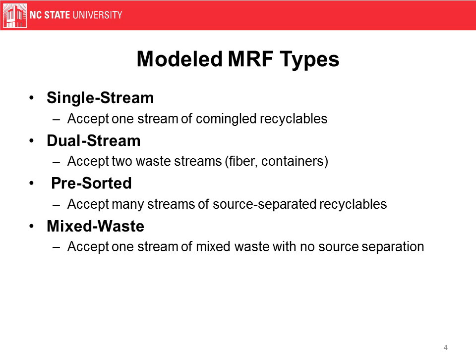Then we have a dual stream MRF, which instead of having one recycling bin on the curb, would have two. You'd have a container stream, which would contain plastic containers as well as metal cans. And then in a separate recyclable bin, you'd have a fiber stream, which would have mixed paper and OCC, or old corrugated containers.